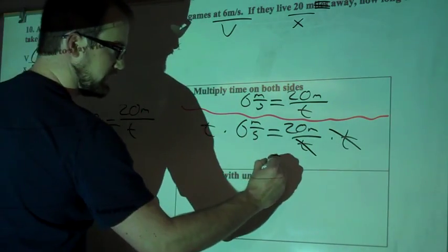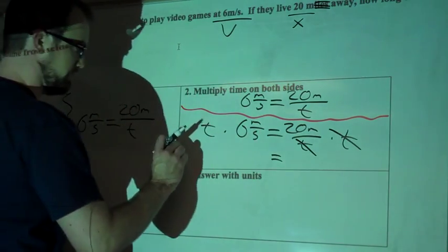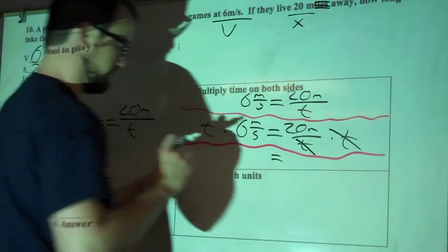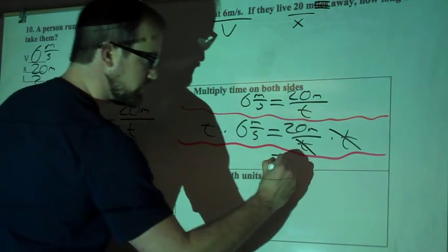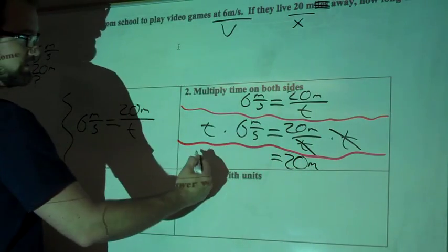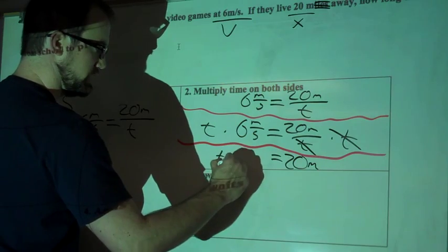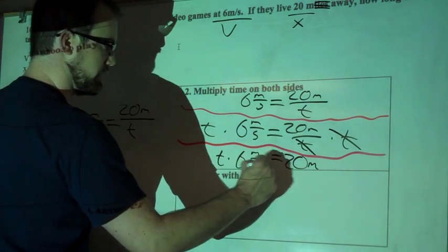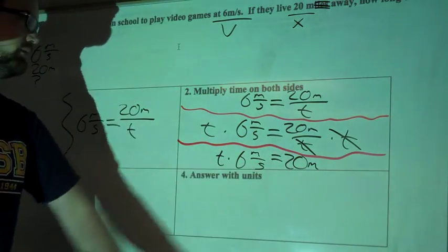So now all that's left on that side of the equation, I'll separate this out, is 20 meters. And then on this side, we have T times 6 meters per second. So T times 6 meters per second equals 20 meters.